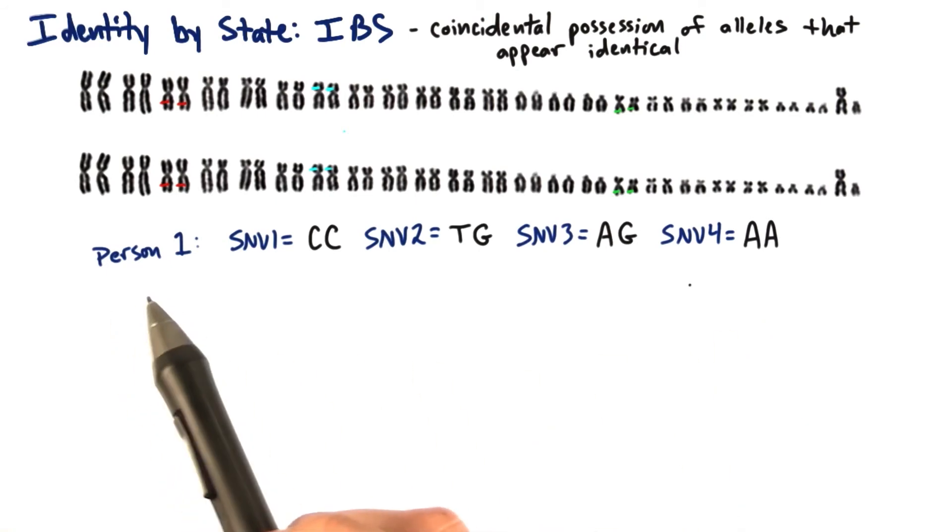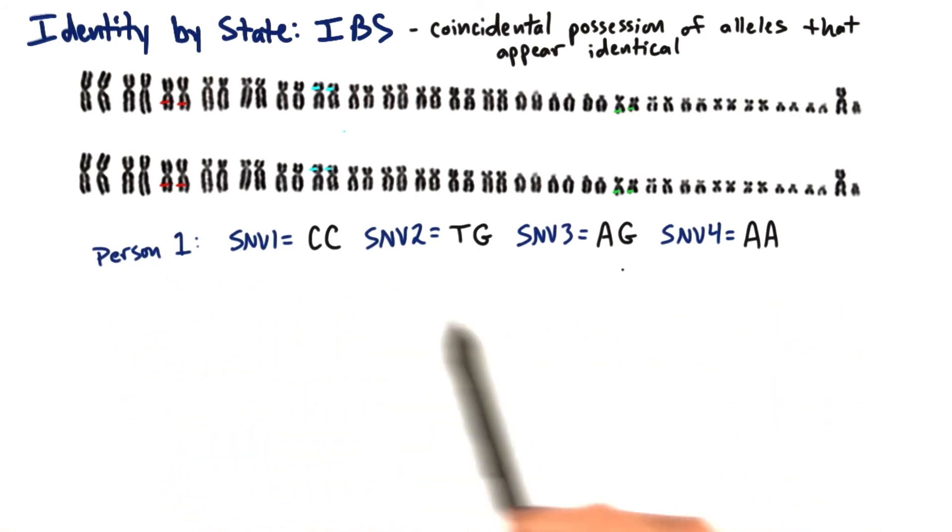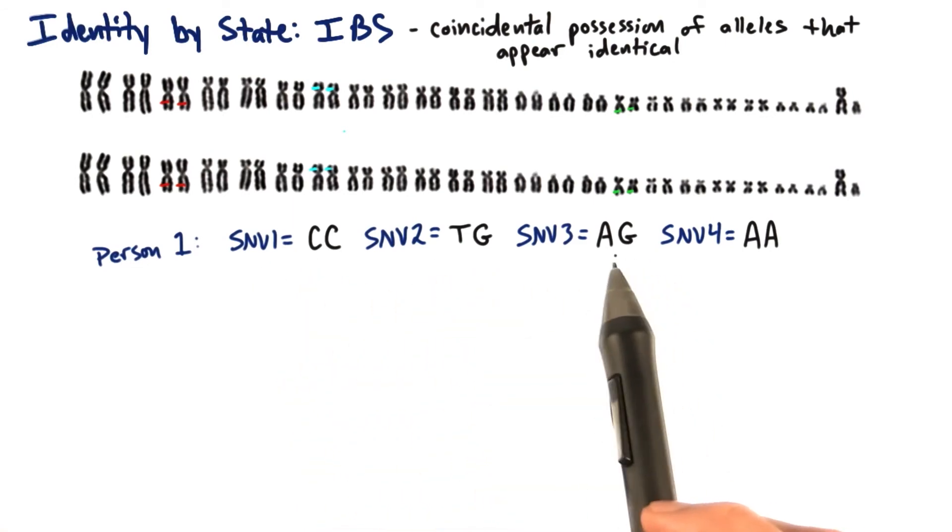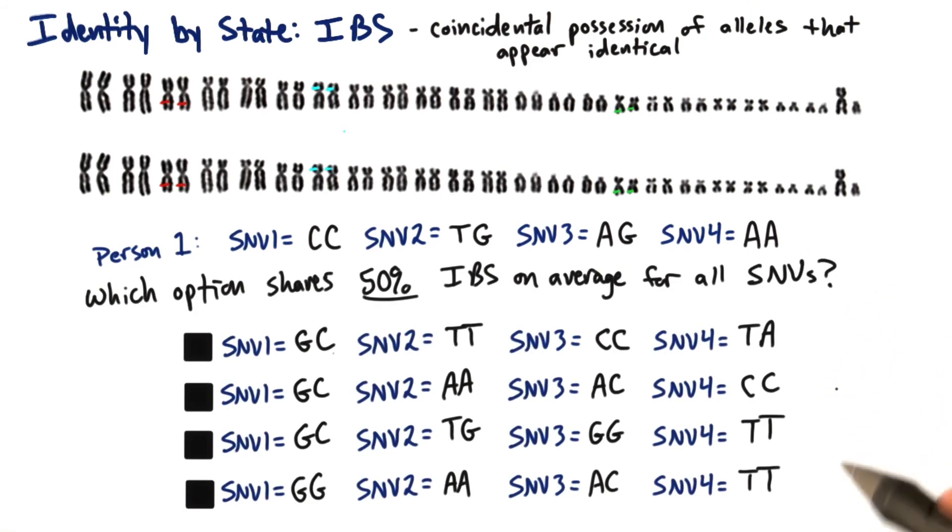So let's take an individual that has an allelic composition for four SNVs, like this. The first SNV is CC, the second one is TG, the third one is AG, and the fourth one is AA. Which of the following options would this individual share an IBS score of 50% on average for all four SNVs? Be sure to check any and all that apply.